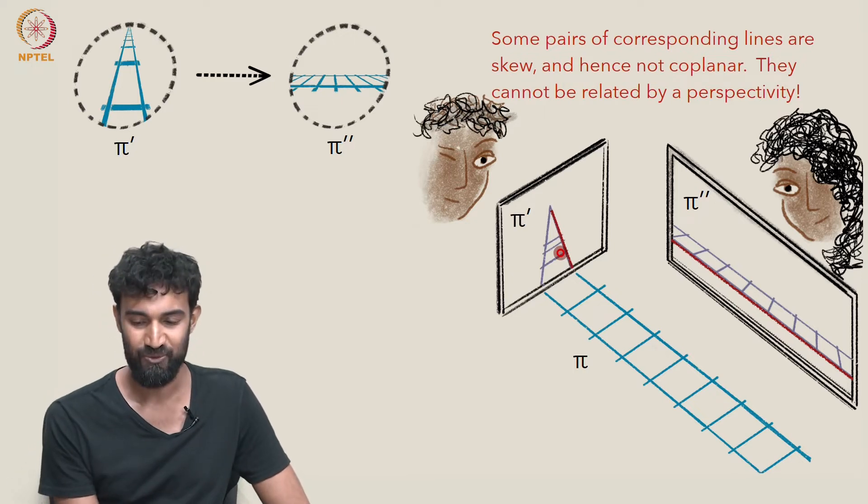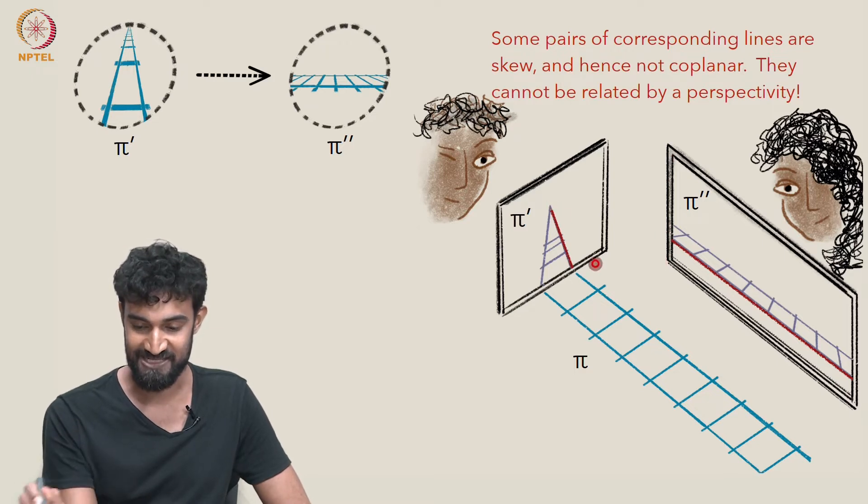So we have a problem. We simply can't relate π′ to π″ by a perspectivity that takes this to this.